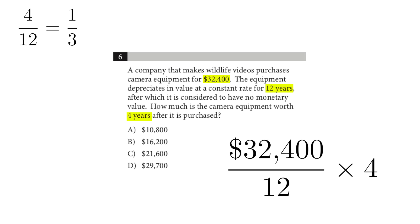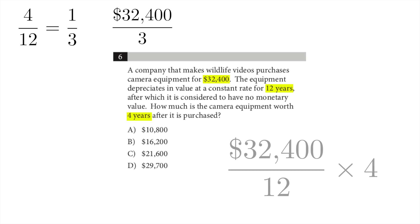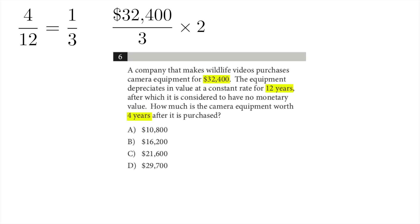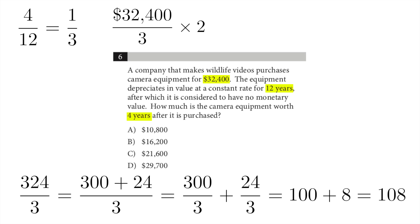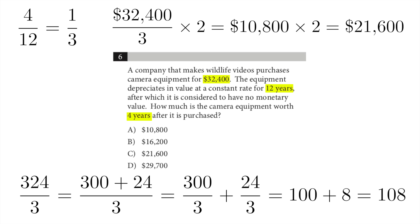All we have to do is divide 32,400 by three — that's the amount of money lost. And then two-thirds is what remains, so multiply the result by two. I'll focus on 324: 300 divided by 3 is 100, and 24 divided by 3 is 8, so that's 108. Tacking on the remaining zeros, we get 10,800. Now we double it, and we have 21,600.